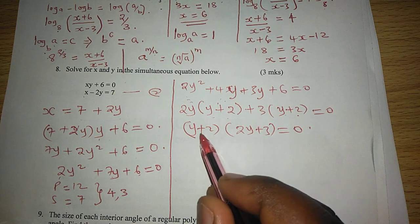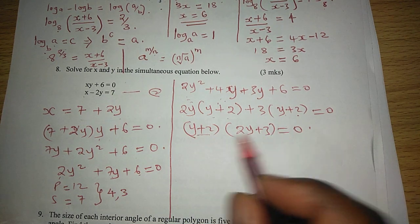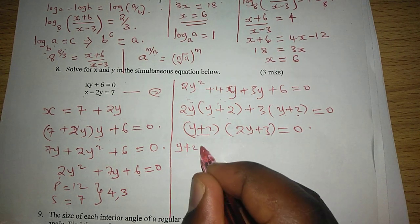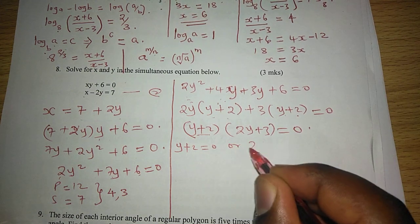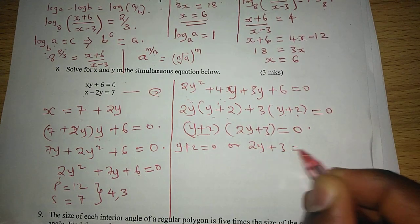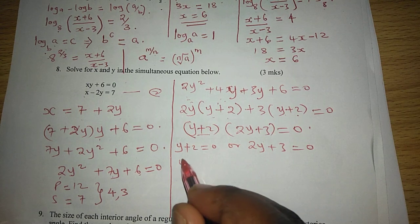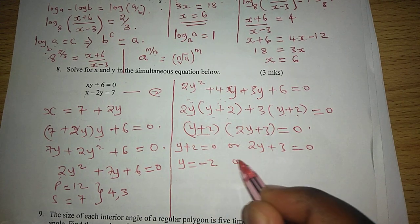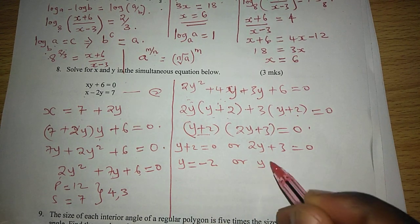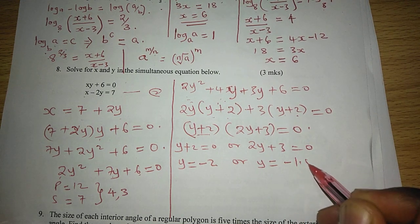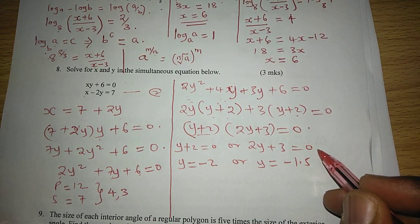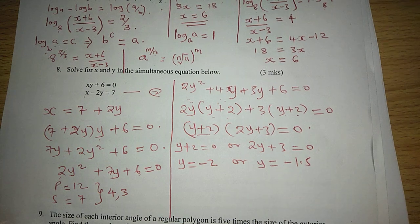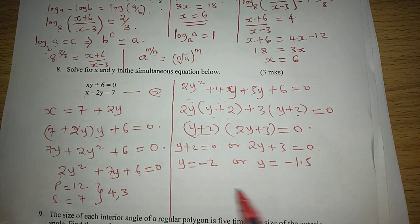Then independently, we equate each of the factors to 0. So y plus 2 equals to 0, or 2y plus 3 equals to 0. With this, you can say y is either negative 2, or y equals negative 1.5, since 3 taken to the other side becomes negative, then we divide by 2 to get 1.5.